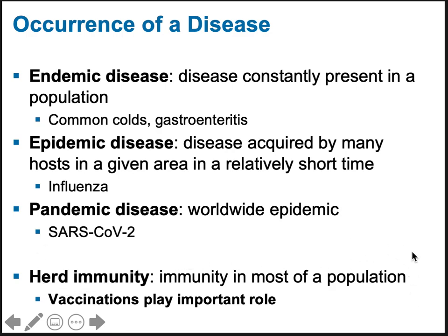Herd immunity — the idea is that if enough people are immune, they're not spreading the disease. Some say a minimum of about 60% of the population needs to be immune, which then greatly reduces disease spread and makes it less likely that non-immune individuals will become infected. The more people that are immune, the better the protection for those who are not.